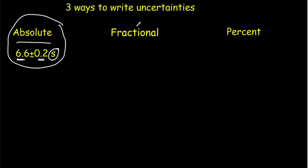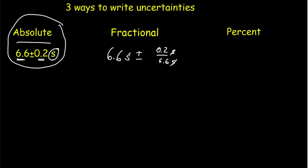Often what we'd like to do is write our uncertainties as a fraction — in fractional form. This uncertainty would be 6.6 plus or minus 0.2 out of 6.6, so you're just looking at how big your uncertainty is compared to your value. When you write it as a fractional uncertainty, you've got seconds divided by seconds, so there are no units in that fraction. The only units are in the value, so make sure you put the units in with the value, otherwise your reader won't be able to tell whether you're writing in absolute or fractional form.